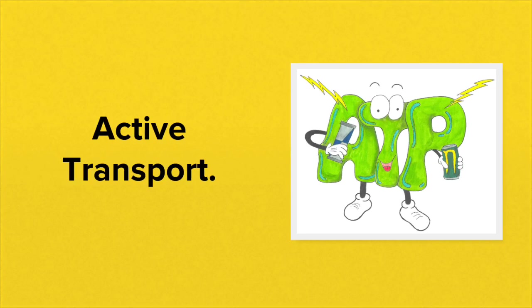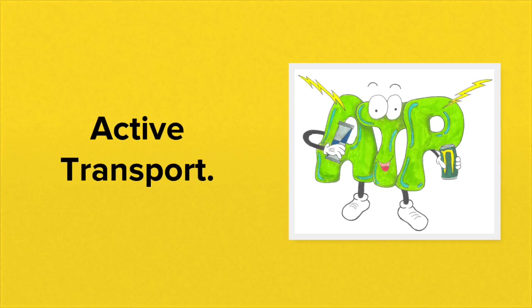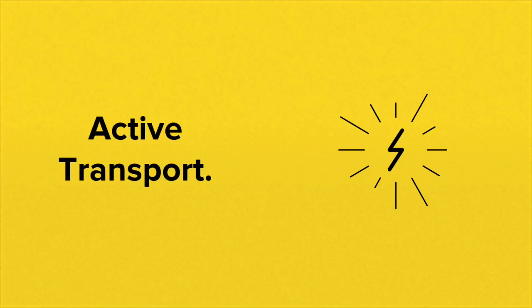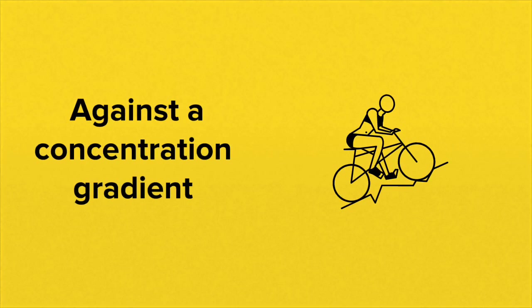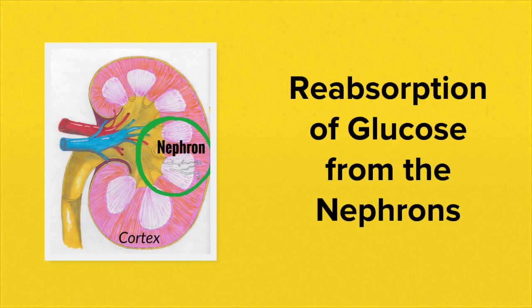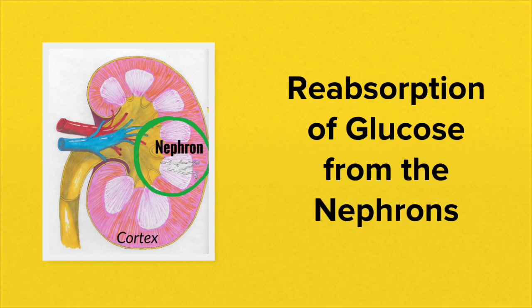Let's just briefly mention active transport. This is how substances are transported across membranes from regions of low concentration to regions of higher concentration. And this requires the input of energy, so ATP is required. This ATP is required because the movement is against a concentration gradient. A good example of active transport is the reabsorption of glucose from the nephrons in the kidney.